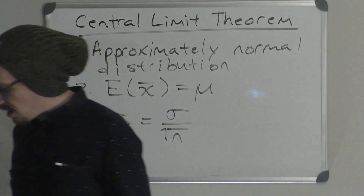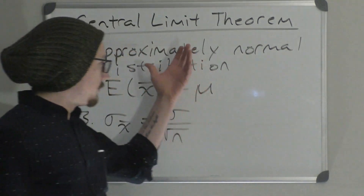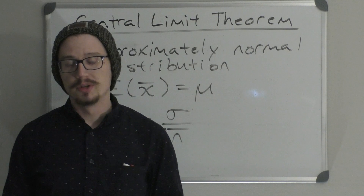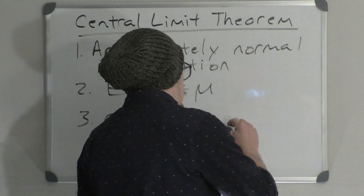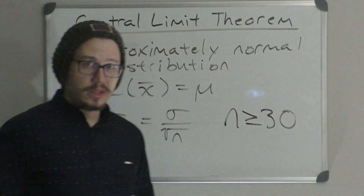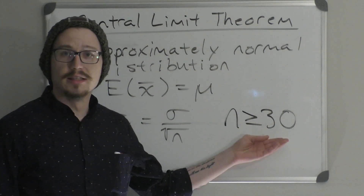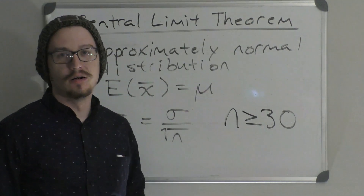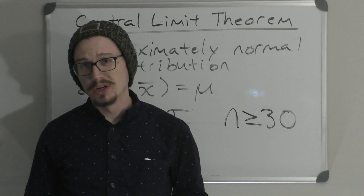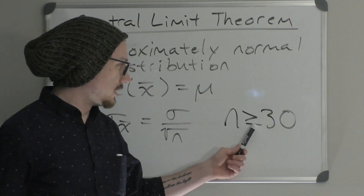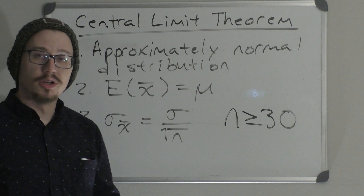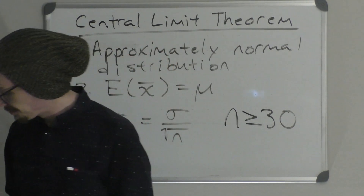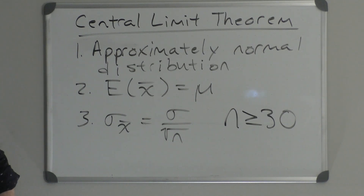Third, the standard error is equal to the standard deviation divided by the square root of n. So if we have a sufficiently large sample size, we don't have to worry about the finite population calculation — we can use the standard error formula under the assumption of an infinite population. 'Sufficiently large' means a sample size greater than or equal to 30. Once we have n ≥ 30, the Central Limit Theorem kicks in and the distribution of the sample mean has these three properties.